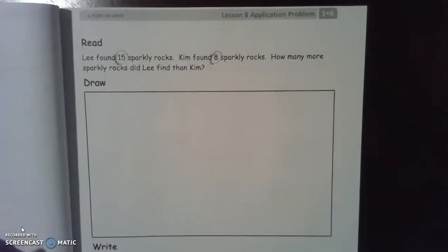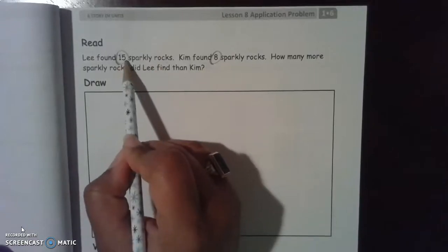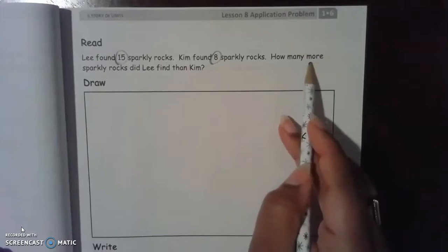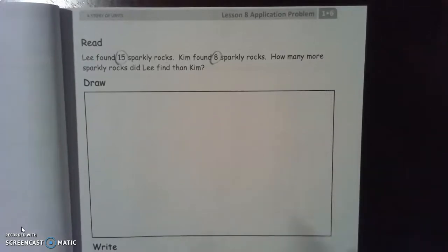So if Lee found 15 rocks, and we need to figure out how many more rocks he found, will that number be bigger or smaller than 15? I think it's going to be smaller than 15, but let's work it out just to make sure.